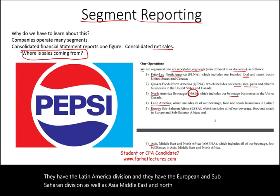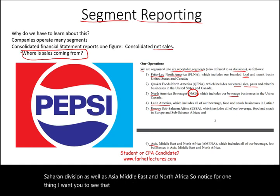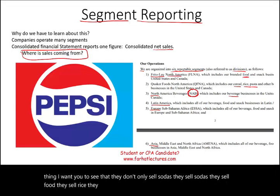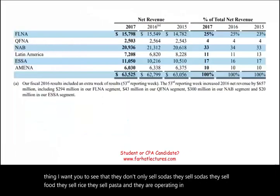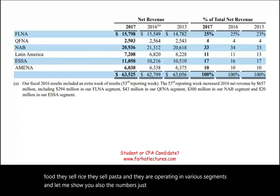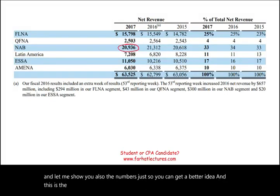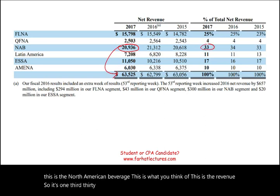Notice that PepsiCo doesn't only sell sodas — they sell food, rice, and pasta, and they operate in various segments across the world. The North American Beverage segment, which is what most people think of when they think of PepsiCo, represents only about one-third, or 33%, of their total revenue.